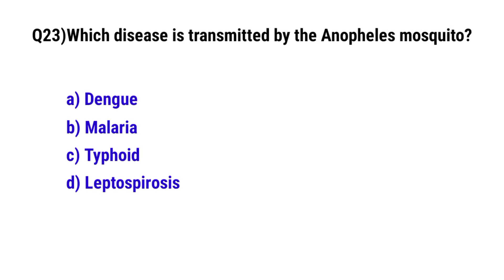Question No. 23: Which disease is transmitted by the Anopheles mosquito? The correct option is B: Malaria.